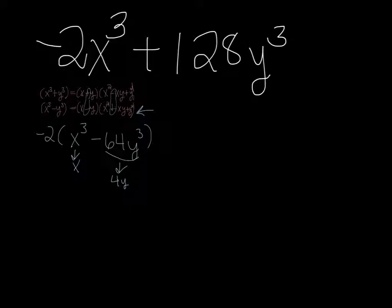So let's put, okay, negative two times, and that's going to be x minus 4y.